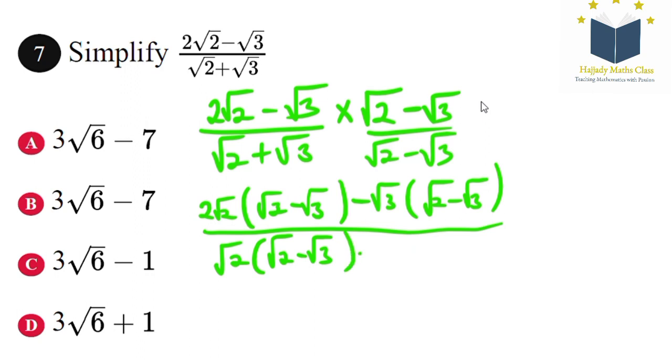Multiplying this out, 2√2 multiplied by √2 is 2 times 2, which equals 4, because √2 times √2 is 2. Then 2√2 multiplied by negative √3 gives minus 2√6. Minus √3 times √2 gives minus √6. √3 times √3 gives plus 3.